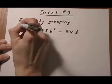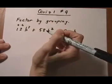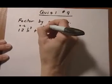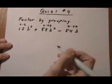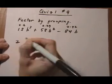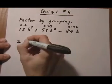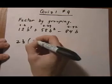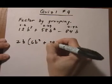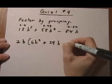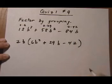Let's see. 12 is 2 times 6. And 58 is 2 times 29. And 84 is 2 times 42. So let's go ahead and pull out a 2. And everybody's got at least 1B. So let's pull out a B. And we're left with 6B squared plus 29B take away 42. All right.